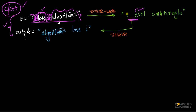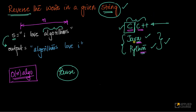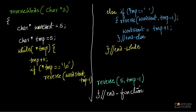If I reverse this whole string — not word by word — first I reversed the words, then I reverse the whole string. If I reverse the whole string, I get 'algorithms love I'. That's the output I want. This is one of many strategies you can employ. Let me walk you through the C/C++ code. If you're planning to write code in Java or Python, that's perfectly okay. Let's see the C code because C code is the trickiest because of the pointer logic.